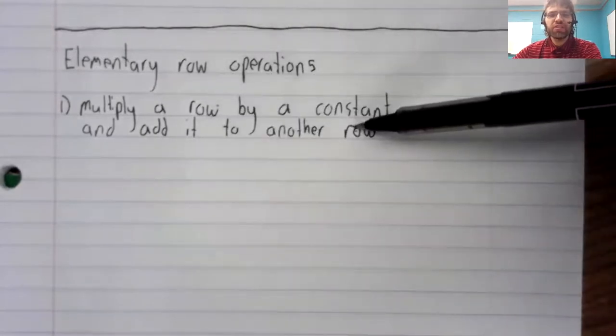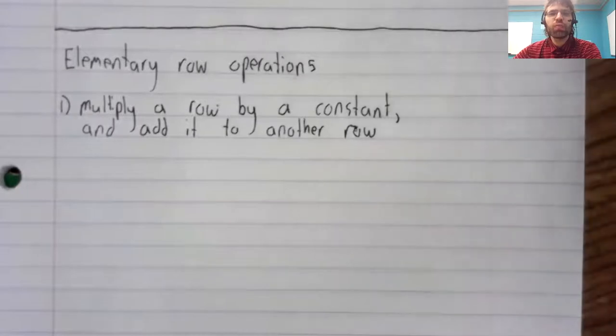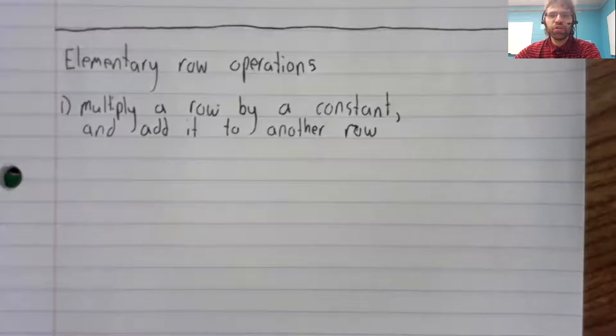Previously I said we could multiply an equation by a constant and add it to another equation. Now I'm stating that about rows.